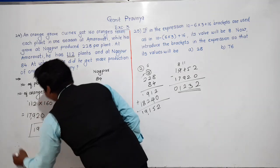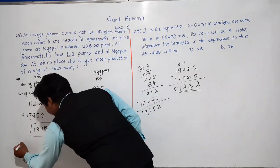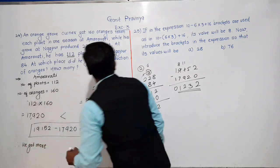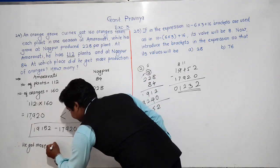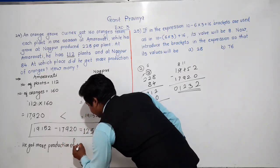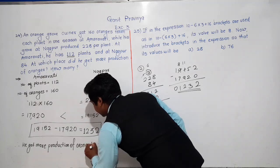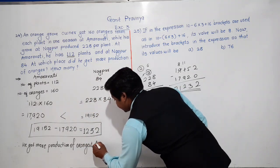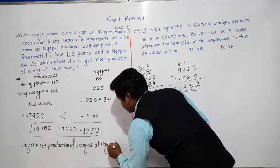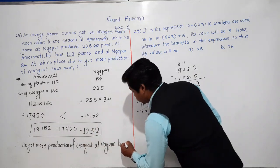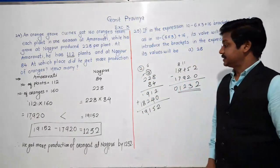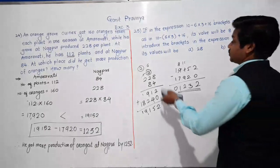He got more production of oranges at Nagpur, by 1,232. Let us now solve the next question — question 25.